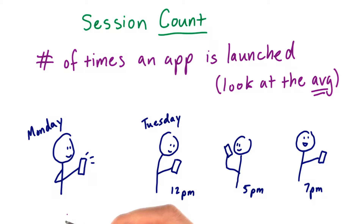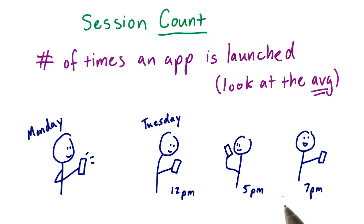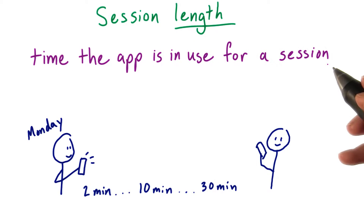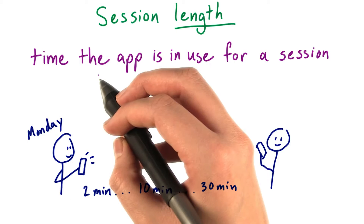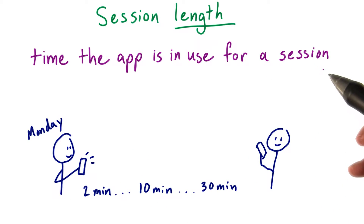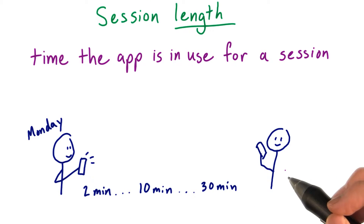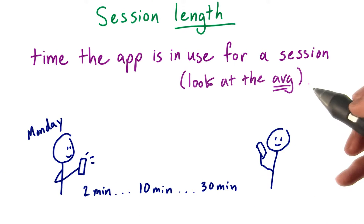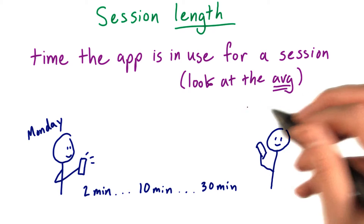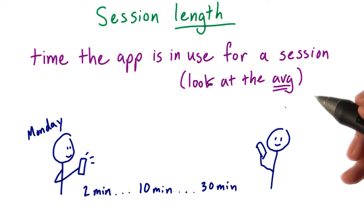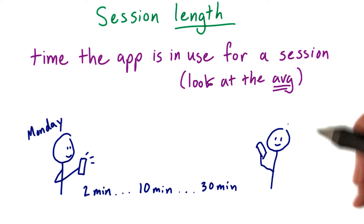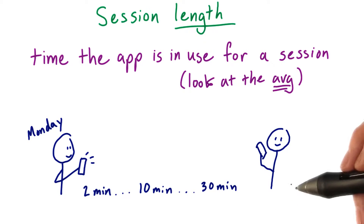But some games are designed for longer sessions instead of multiple short sessions, so the session length is also important. Session length is the amount of time that the app is in use for a particular session — whether that's a few minutes or going on to lengths of hours. For this to be a useful metric, we would usually look at the average session length across users to see how long a typical user plays once they open the app.